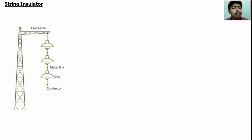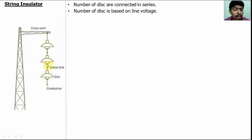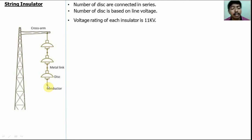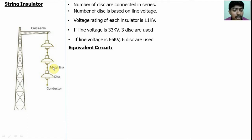This is the basic image of the string insulator. In a string insulator, a number of disks are connected in series. The number of disks is based on the line voltage. If the line voltage is 11 kV, one disk is enough. If it is 33 kV, we need three disks in series. If it is 66 kV, we need six disks in series. A metal link is used to connect the disks.